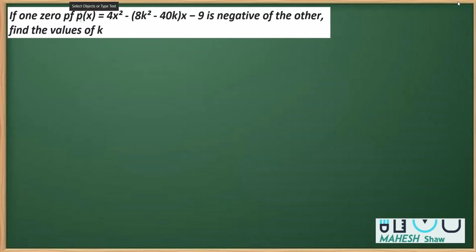This question from the chapter on polynomials, class 10, says one zero of this polynomial is negative of the other, and we have to find the value of k. First, we'll write the equation.